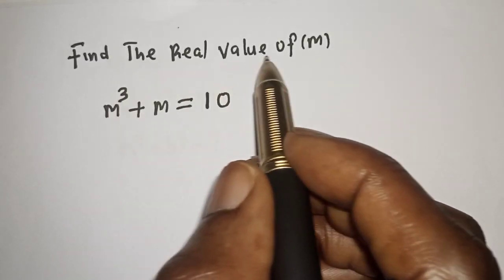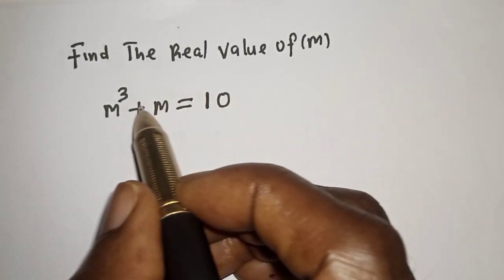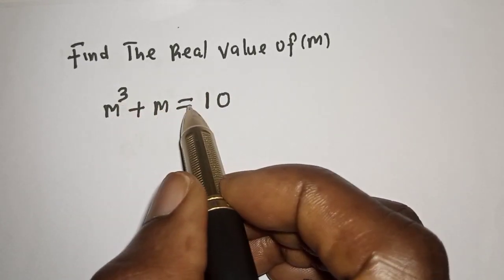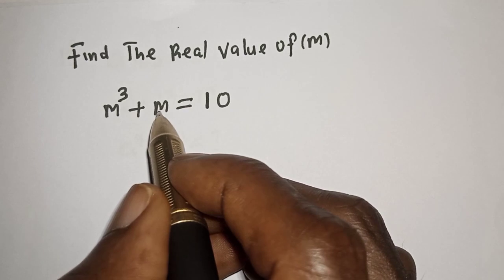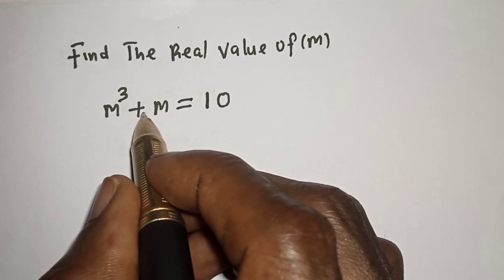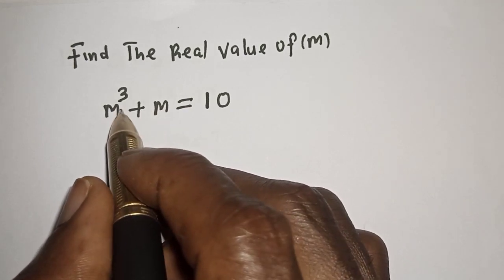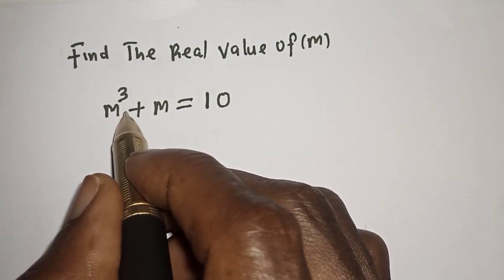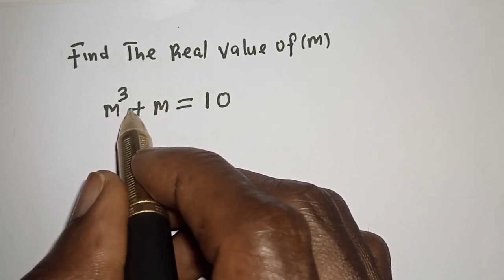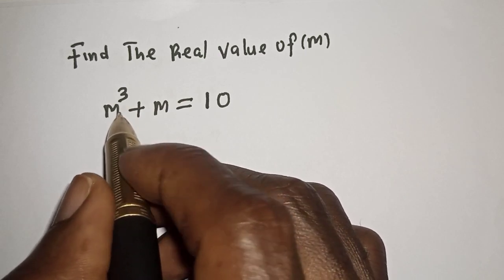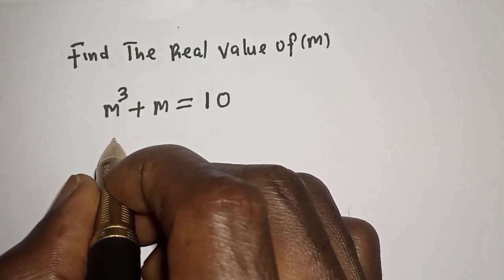Find the real value of m, where m raised to the power 3 plus m is equal to 10. Hello, welcome to Mathfocus. How to solve for m from this given equation?